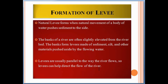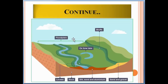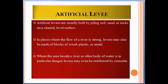Levees can help direct the flow of the river, and they may be natural or artificial. A natural levee forms when a body of water deposits sediment to the side. You can see here the flood plain and the river — the levee forms a barrier on both sides of a river. Natural levees are formed by sediments transported by the river from the upper course, deposited on the flood plain and river bank.